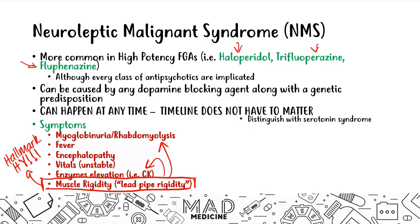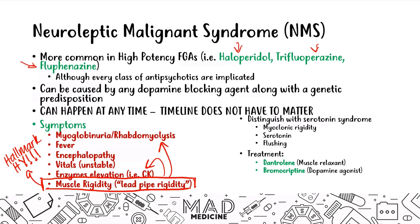NMS is easy to distinguish from serotonin syndrome: in serotonin syndrome you get myoclonic rigidity, not lead pipe rigidity, and patients present with flushing along with increased serotonin levels. When treating NMS, use a three-pronged approach: give dantrolene as a muscle relaxant for the rigidity, bromocriptine as a dopamine agonist for the sedative effects, and discontinue any causative agent such as the antipsychotic.